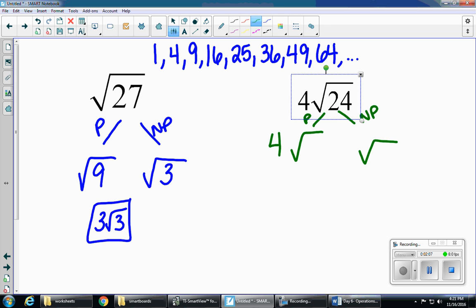Which of those divides in evenly to twenty-four? We're gonna get four, and it's four times six. So four is the perfect square, it goes in the radical on the left. Six is the non-perfect square, it goes on the right. So the square root of four is two, and my non-perfect square comes down.